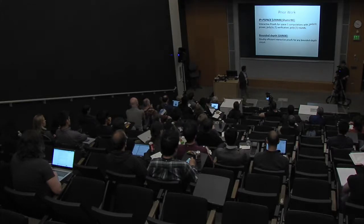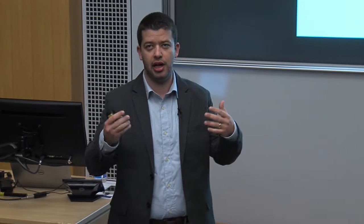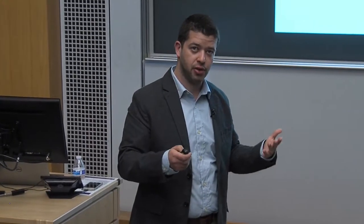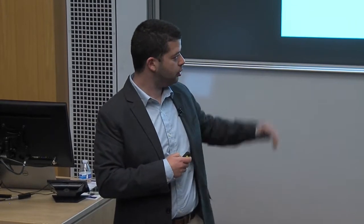A second result I want to mention is by Goldwasser, Kalai, and Guy Rothblom. What they show is actually these doubly efficient interactive proofs — like what we want — for any bounded depth circuit, meaning any computation that a priori you could do very fast on a parallel computer, perhaps in sub-linear time on a parallel computer. Their result gives a doubly efficient interactive proof. However, beyond this limitation to highly parallelizable computations, one major caveat of their results is that it requires a lot of interaction — the number of rounds corresponds to the depth of the circuit, which in any reasonable setting is going to be at least a large polylogarithmic. That's the caveat of their result, which brings me to the first result I want to tell you about.